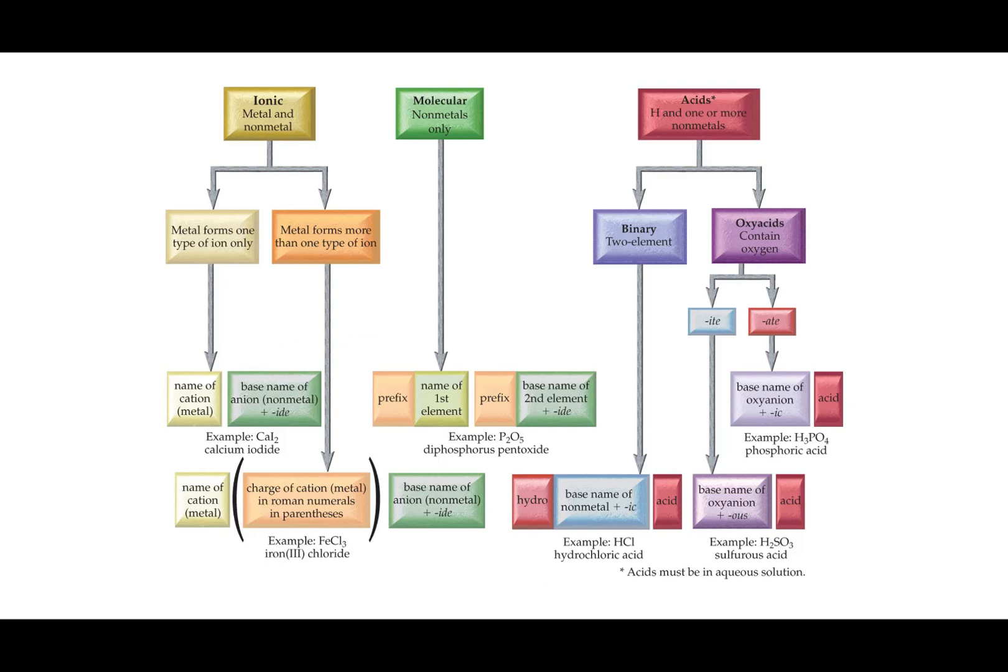All right, gentle people, to finish off chapter two, here is all the naming that we've covered. So just to remind you guys, there are three major categories when we name things: ionic compounds, molecular compounds, and acids. So here is a flowchart, and you can follow each one of these routes depending on which type of compound you have. Well, I hope that made sense, and remember to stay safe, Chem 1A.